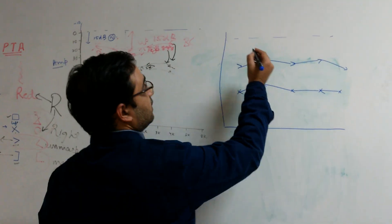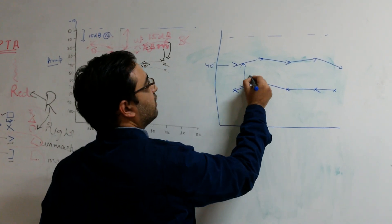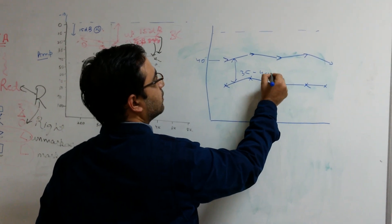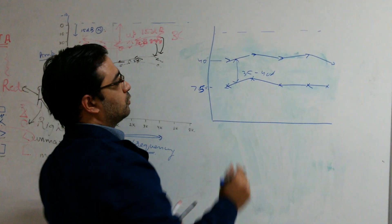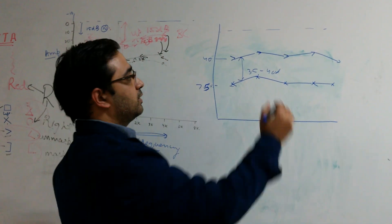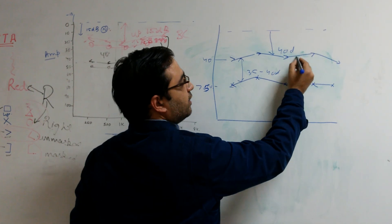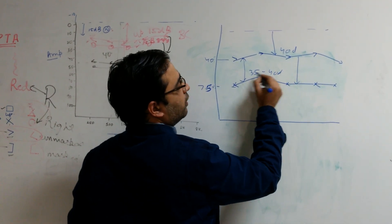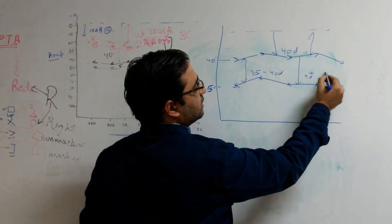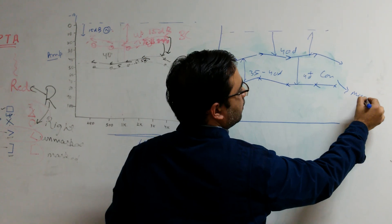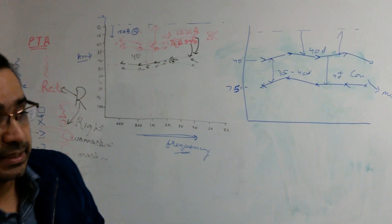Now in this case, suppose this is at 40 decibels and this gap is again 35 to 40 decibels, this is mixed deafness because bone conduction has come down to 40 decibels, further the air conduction has gone down to 40, 35 to 40 decibels, both sensor neural plus conductive, this is mixed deafness.